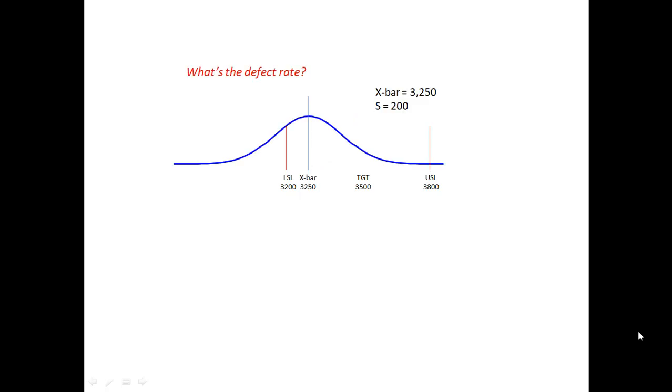So we go out and measure the actual process, and that's this blue curve. Suppose we measure our actual performance and find that on average we perform at 3250 with a standard deviation of 200. So we have a very wide curve centered at 3250.